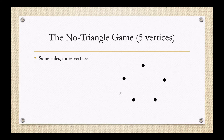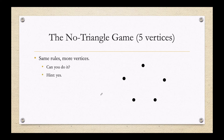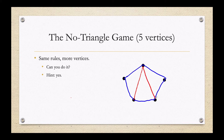What if we have five vertices? Exact same game, exact same rules, just now with five vertices. You connect every pair with an edge, either red or blue. My question is: can you do it in such a way that you don't end up with any red or blue triangles? I believe the answer is yes — lots of different ways you can do so. One way is to connect the outside all in one color, then draw a star on the inside in the other color. I think you've connected all pairs of vertices without creating any triangles.